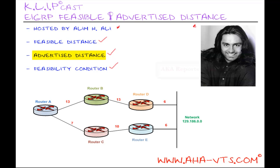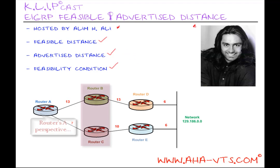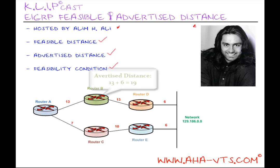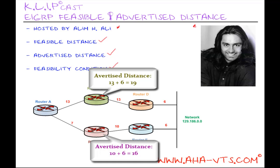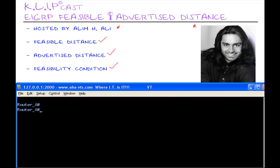Now, the advertised distance, or reported distance, is the total metric along a path to a particular destination, as advertised by an upstream neighbor — in this case, routers B and C from router A's perspective. So in our example, the advertised distance from router B is 19, and the advertised distance from router C is 16. So let's go to a live network and take a look at the feasible distance and advertised distance.